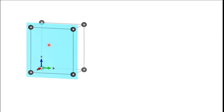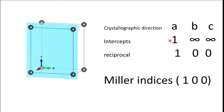Second example: is plane ke index agar hum nikaalein toh intercept A par yahan par aa raha hai 1A, toh in terms of A values aapke paas intercept ki value hogi 1. B ke along intercept agar mein nikaaloon toh yeh wala plane B ke parallel mein run kar raha hai, toh intersect hoga at infinity. Again C direction mein C axis ke parallel, toh C mein yahan par aapke paas intercept hoga at infinity. Reciprocal values: 1 ka inverse 1, infinite ka inverse 0, infinite ka inverse 0. Miller Index ki value 1, 0, 0.